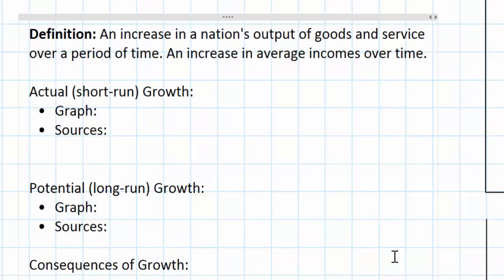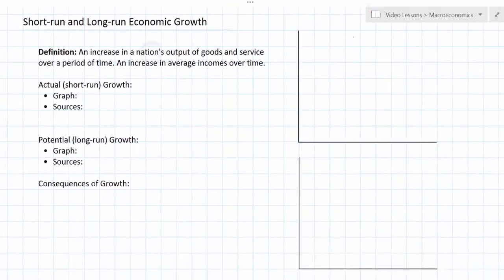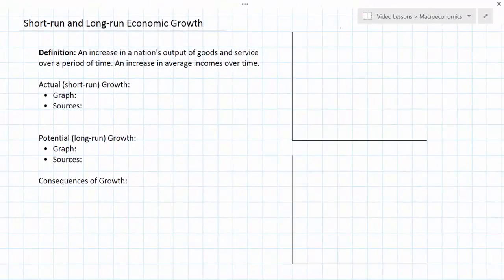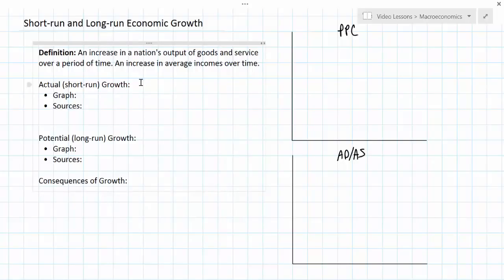We'll be doing this in two different models: both the production possibilities curve, which is the very first graph you ever learned in your economics class, and in the ADAS model, which is a macro-specific model that you have learned more recently. We'll start with actual or short-run economic growth.